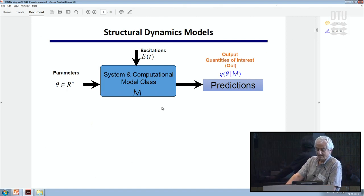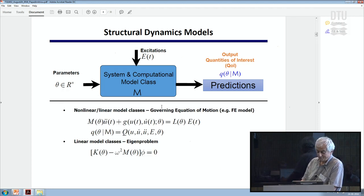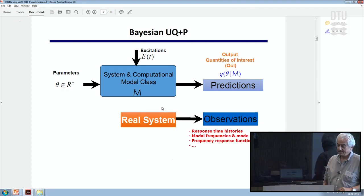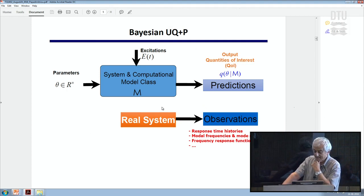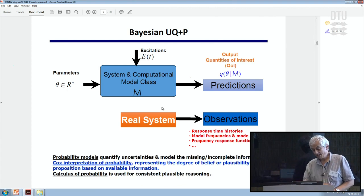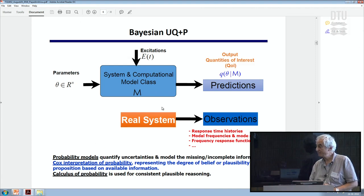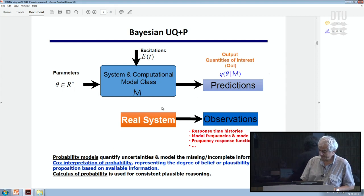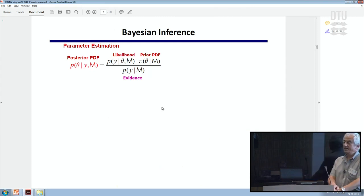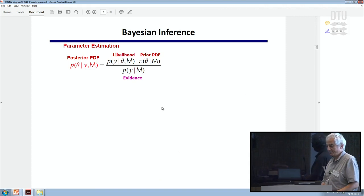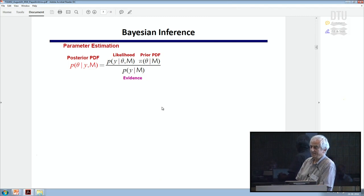My model is usually a finite element model. Parameters of the models can be stiffness-related parameters and boundary conditions. Given the model and the values of the parameters plus the excitation, I can make predictions using the usual equations of motion in structural dynamics. Observations collected from a system could be response time histories, frequency response functions, modal frequencies, and mode shapes. I will quantify uncertainties using probabilities, where probability represents the degree of belief.